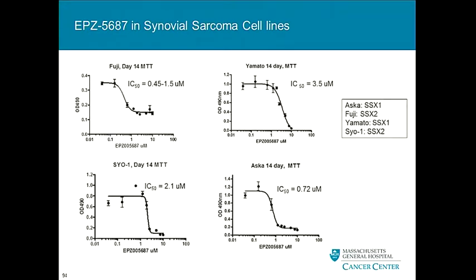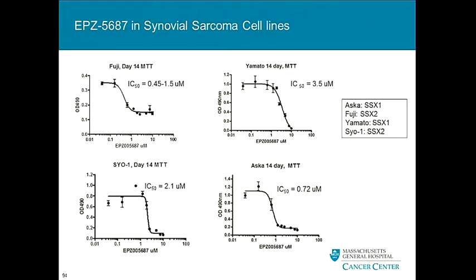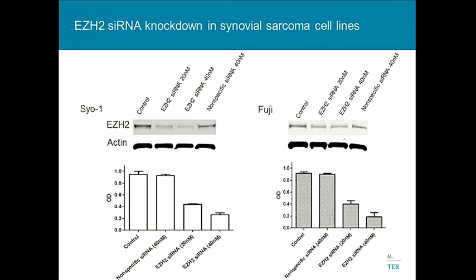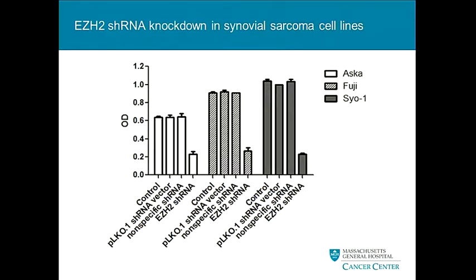When we treated a number of our cell lines in culture, we saw high nanomolar to low micromolar IC50s, which looks really promising for a tool compound. We had a hypothesis that there might be differential activity for different fusion partners, but that doesn't appear to be the case so far. To be thorough, we did knockdown studies using siRNA and viral shRNA vectors, and saw nice inhibition with cells dying in vitro across three different cell lines.